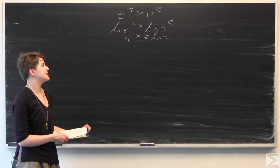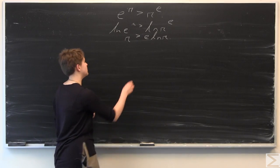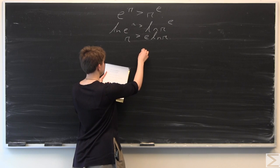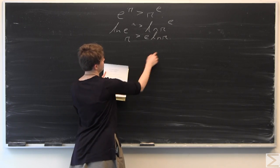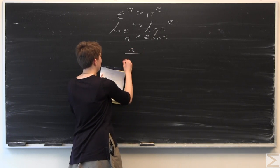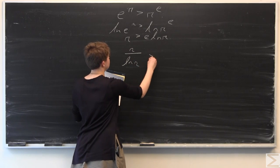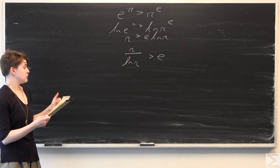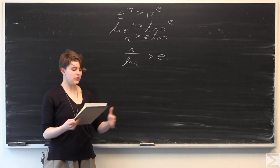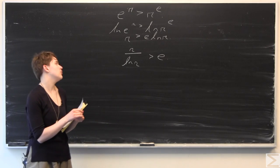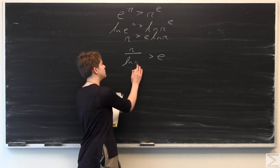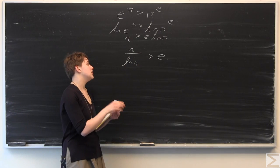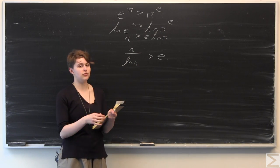Now we can isolate. We have pi's on both sides, so we divide by ln of pi. We get pi over ln pi is greater than e. What we're going to do now is look for a more general function that we can use and create some restrictions on that function.